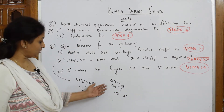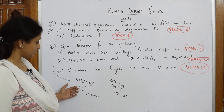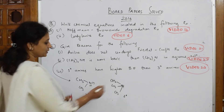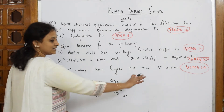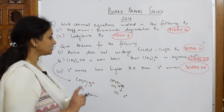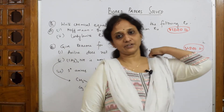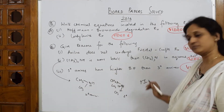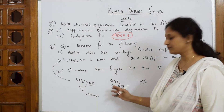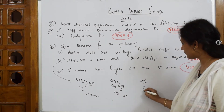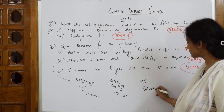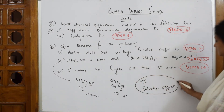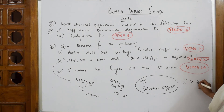Now, the tertiary amine has three alkyl groups and the secondary amine has two. So the tertiary should be more basic because more alkyl groups donate more electrons — the electron cloud is easily donated. But the important concept here is: you have +I effect acting in both cases. Apart from that you also have an effect called solvation effect or hydration effect. These two things together make the secondary amine more basic than the tertiary amine.